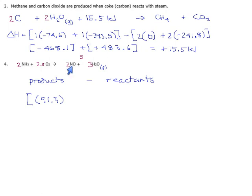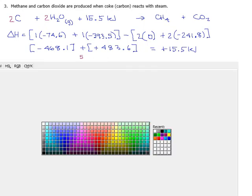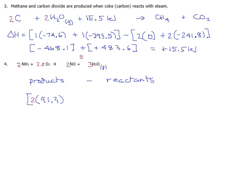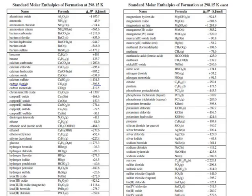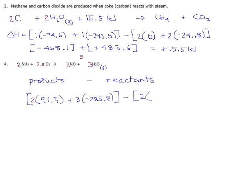So, back to products minus reactants. We have two moles of NO, which is plus 91.3. And then we have three moles of water. Water in liquid state is minus 285.8, lower than as steam, which makes sense. So that's our products. Minus. And for our reactants, we have two moles of ammonia, minus 45.9. And 2.5 times, the heat of formation for oxygen is zero, which means you can either put a zero or you can just skip it.